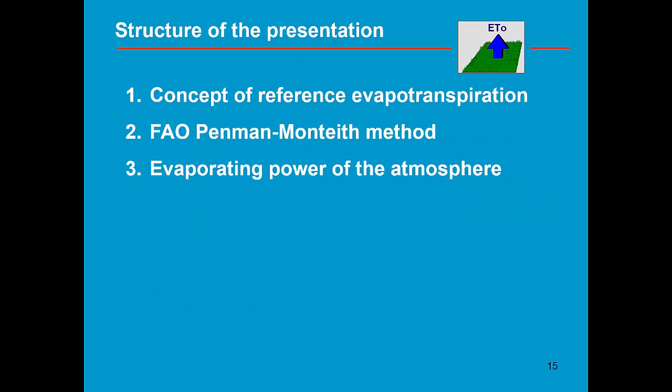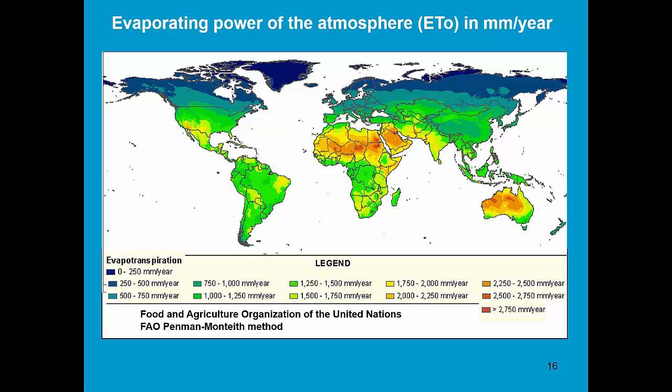In the last part of this presentation, let me visualize the scale of ET₀. Here we see the evaporating power of the atmosphere. It is the average over the year. It is expressed in millimeters per year. In the light blue part, the average evapotranspiration in a year is only 2 mm per day.